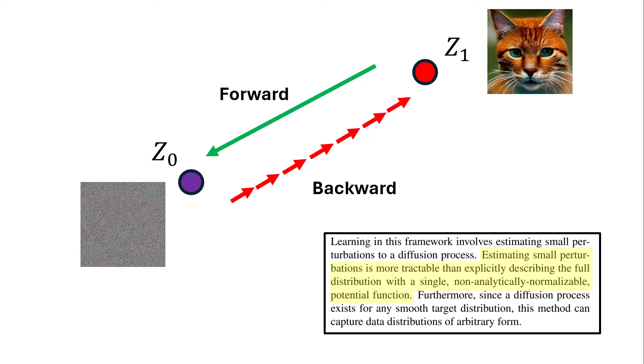Before talking about it, we need to talk about another paper called Flow Straight and Fast from 2022. In that paper, they showed that this transition from Z0 to Z1 is not a straight line — instead it is a curvature. And to solve this transition from Z0 to Z1, we can define an ordinary differential equation.